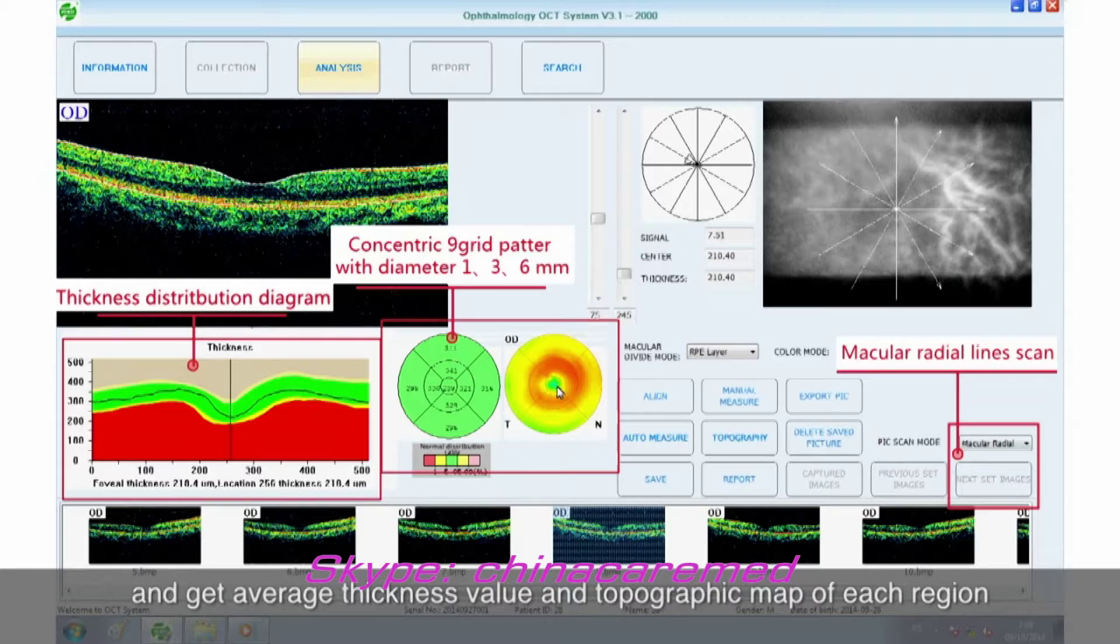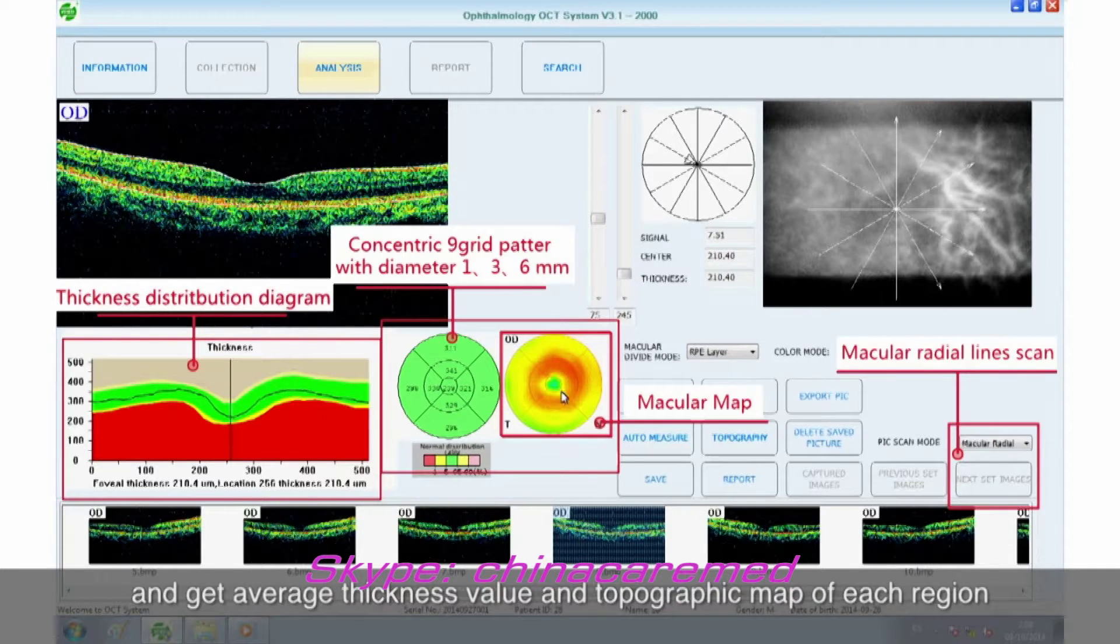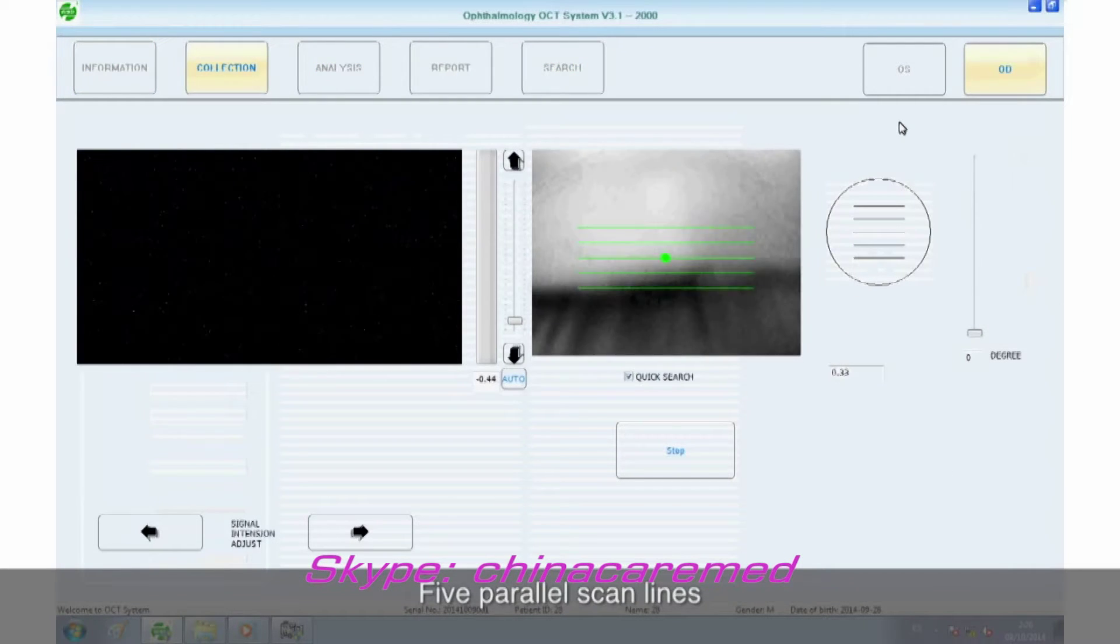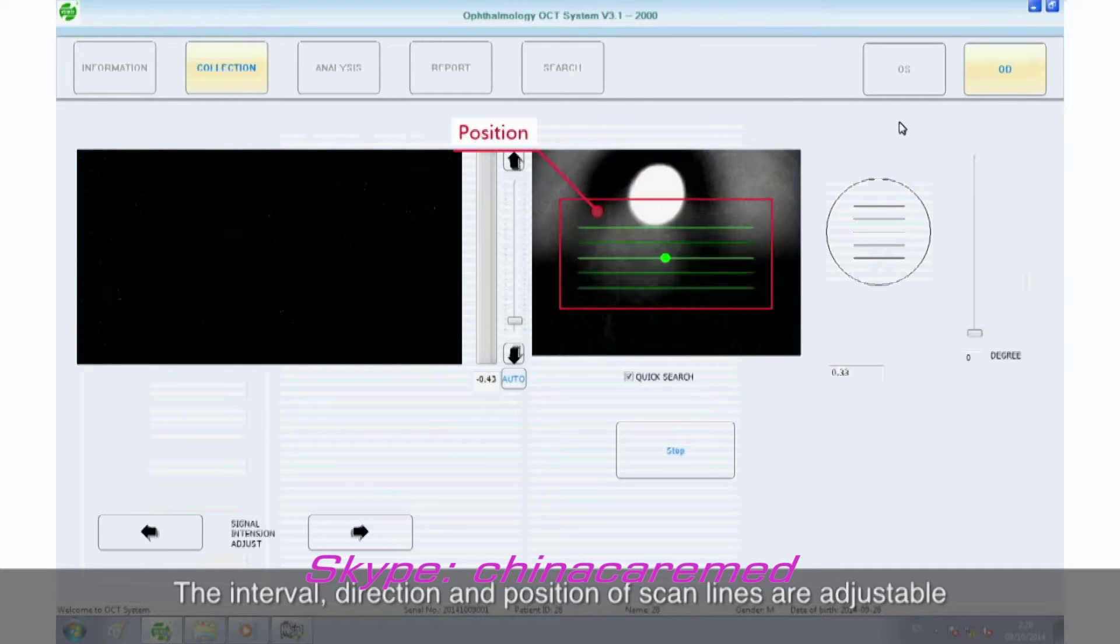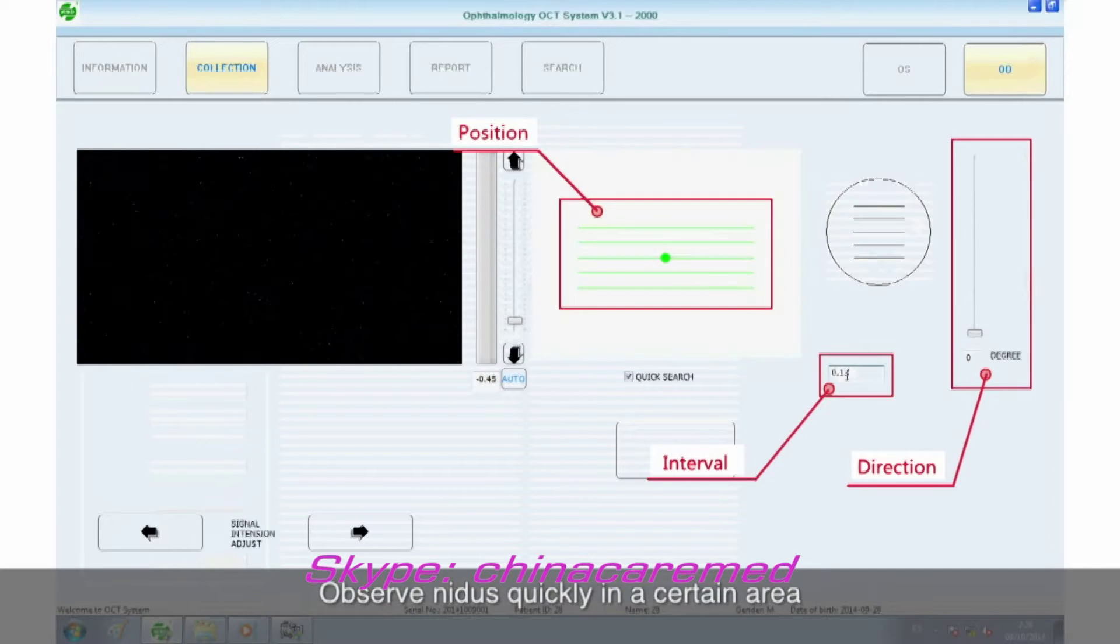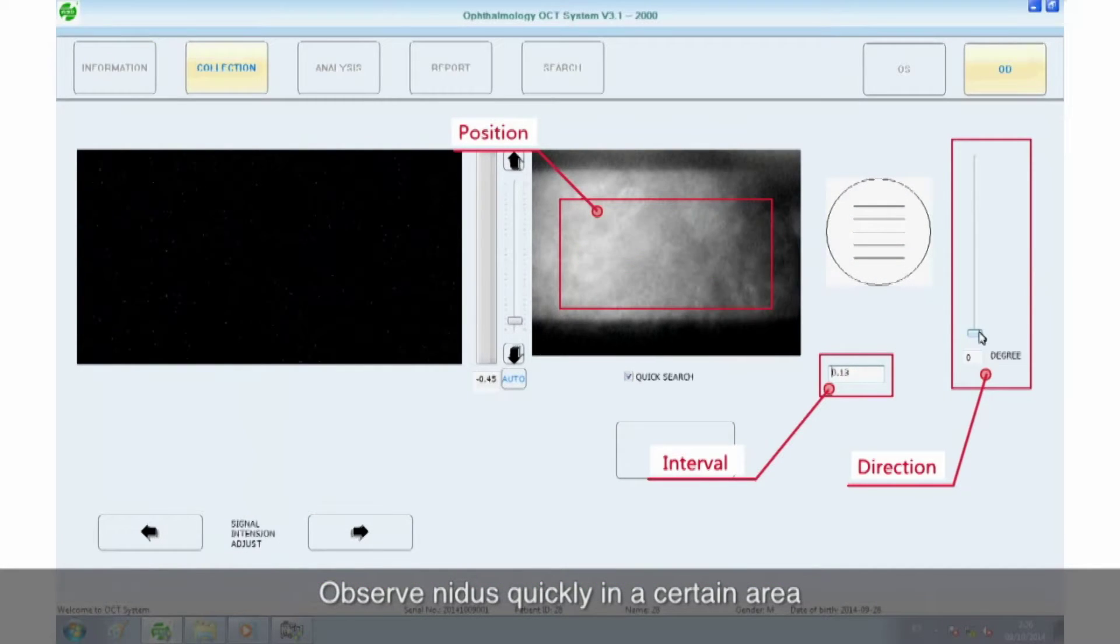Macular raster line scan. Five parallel scan lines. The interval, direction, and position of scan lines are adjustable. Observe nidus quickly in a certain area.